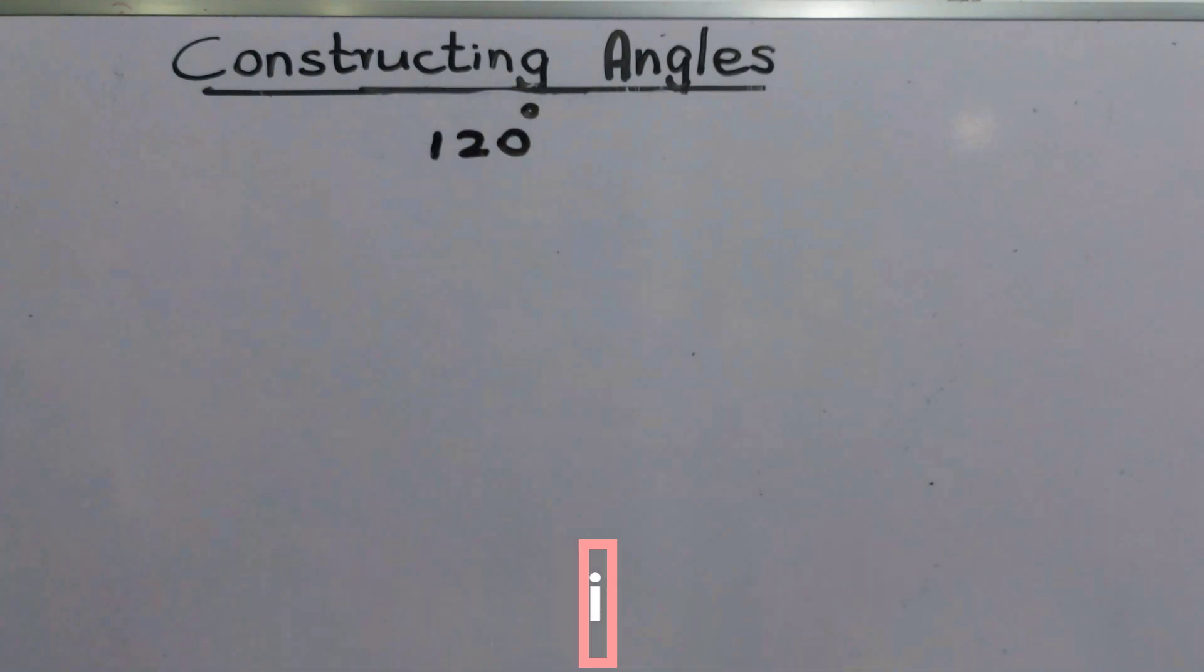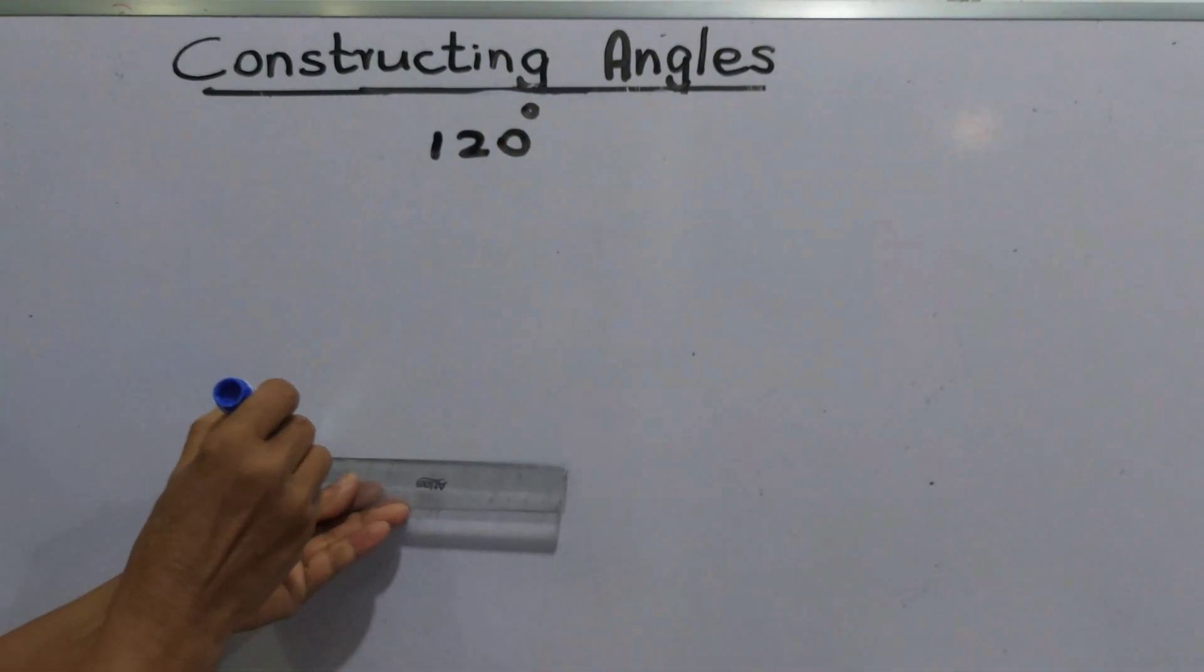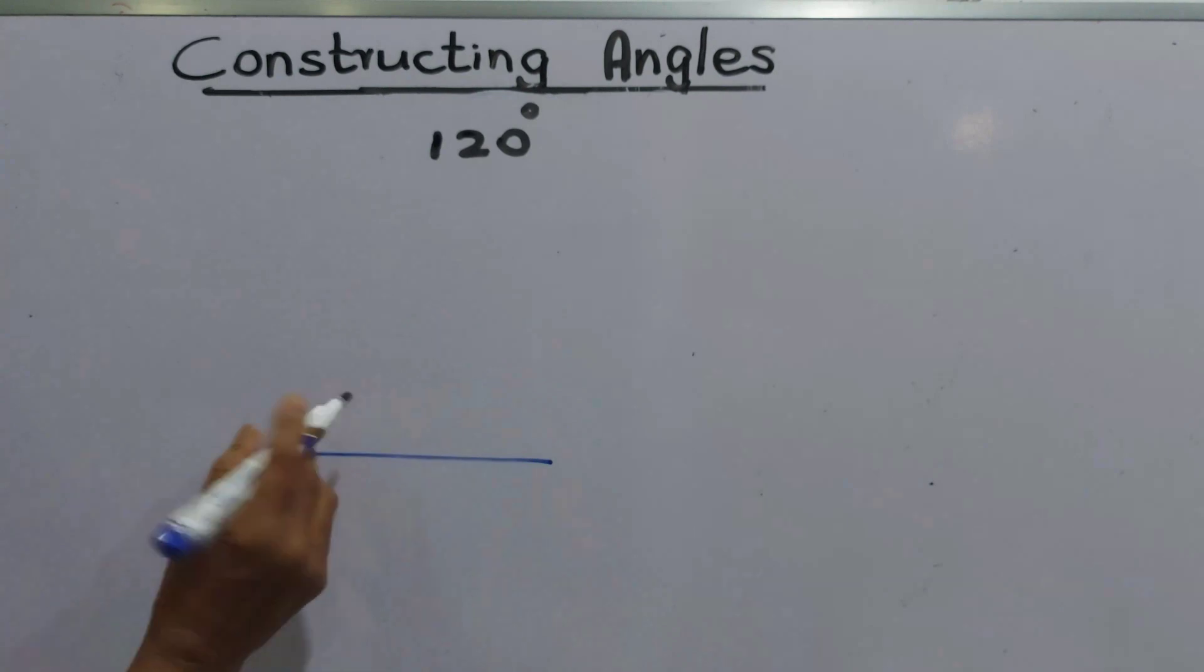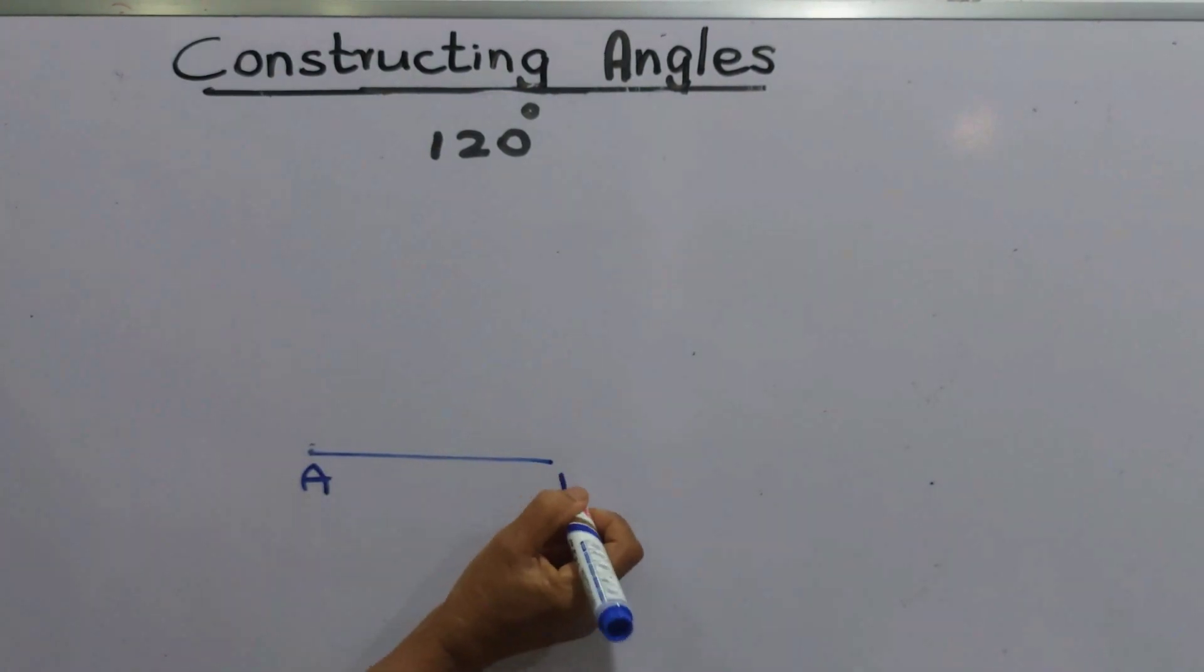First step is draw a line segment, name it as AB.